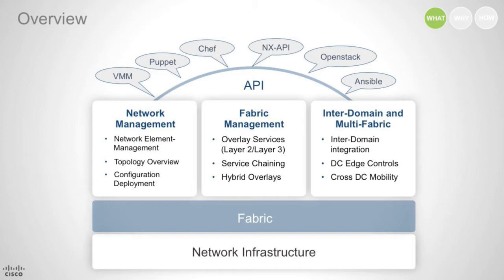So how it looks is: at the bottom layer, you have your network infrastructure as it exists today. On top of that, we layer it with a VXLAN-based fabric, which is IP-based. But then we take it to the next level by providing you essentially three pillars.